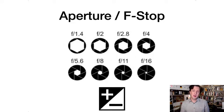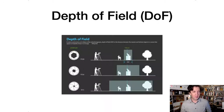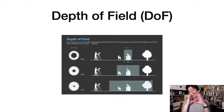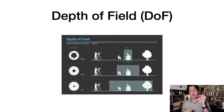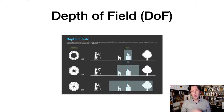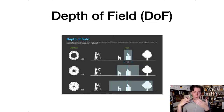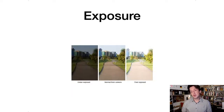Depth of field is a result of changing that aperture. Depending on how big or small that hole is, that determines how much of the scene is in focus. The smaller the hole, the bigger the depth of field — you'll be able to see all the way from yourself to the mountains far away. With a really big opening, great for portrait photography, just the single model is in sharp focus and everything behind them is blurry.